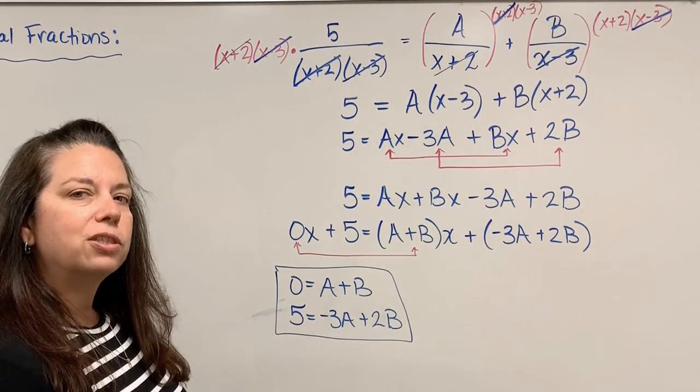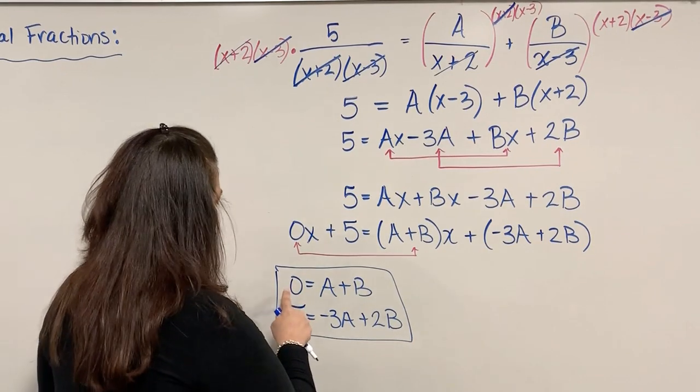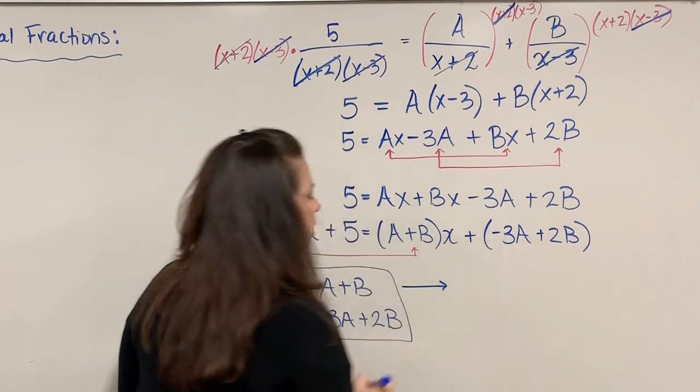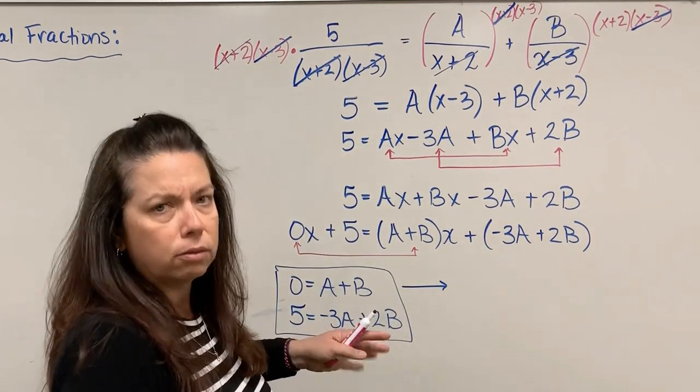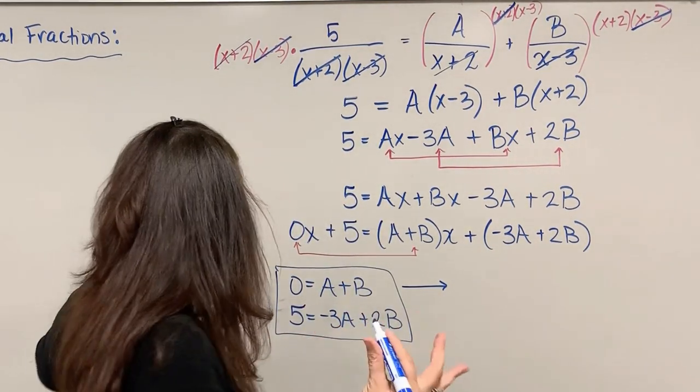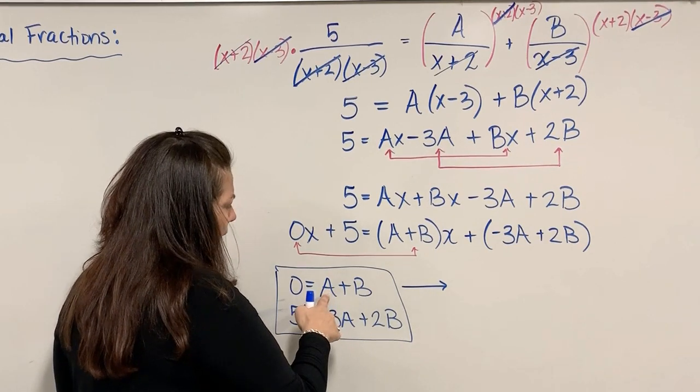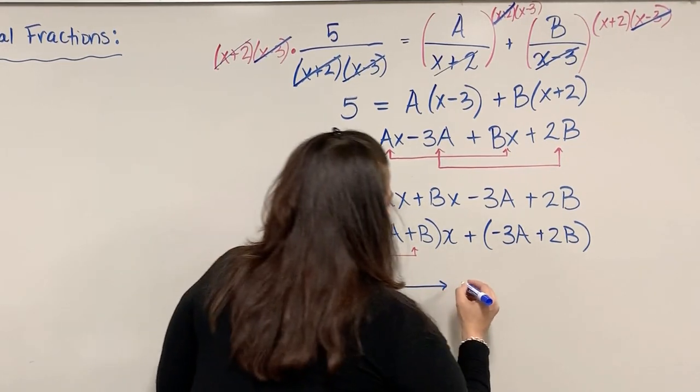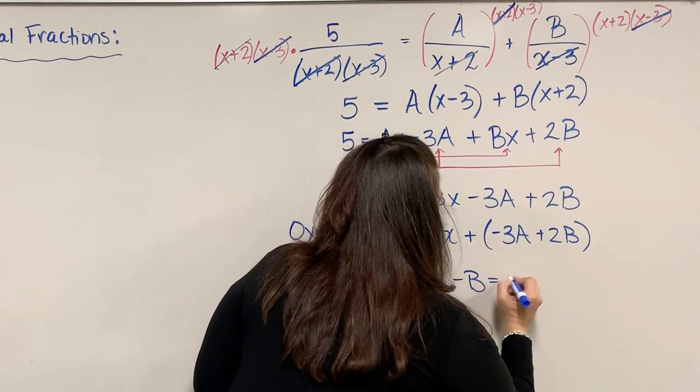I'm going to use substitution here. I have a nice equation 0 = A + B. Let's rearrange that and solve for A. If I solve for A, I can subtract B over, so -B = A.